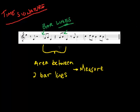So the area between two bar lines is a measure. And measures can really contain anything. It can contain notes, rests, or a combination of both, right? We can see there's a rest here, note here, note here, rest here.